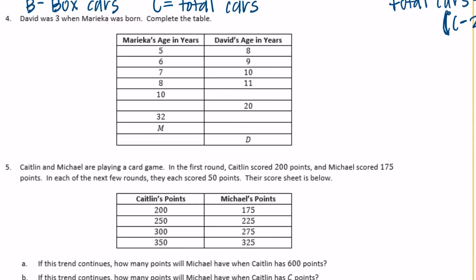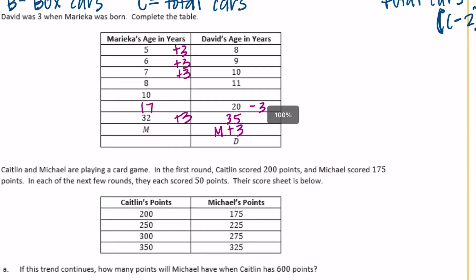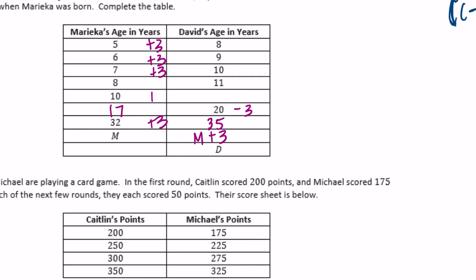Problem four: David was three when Marika was born. Completing the table: when Marika was three, David was eight; she was six, David was nine; seven and ten — she's always three years older. If Marika was 32, David would be 35. If she's m years, we do m plus three. Working backwards, if David's age is 20, 20 minus three gives us 17. The expression for David's age given Marika's is d minus three gives Marika's age.